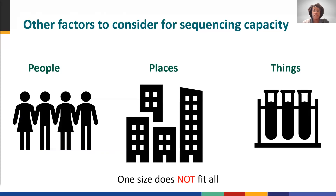One size does not fit all when it comes to sequencing strategies and laboratory capacity. The next set of slides provides examples of beginner, intermediate, and advanced laboratories and their potential capabilities based on observations around the U.S. For this module, we will refer to capacity in terms of equipment access, associated supplies, and personnel needed to perform sequencing.